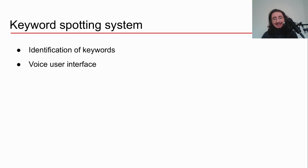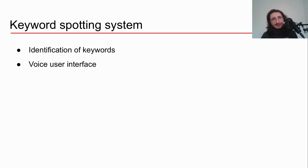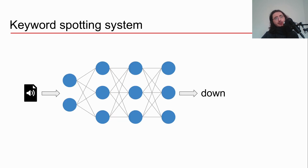A keyword spotting system is able to identify a limited number of keywords — so we're talking about classification here. We have audio files, we analyze them, and we decide what keywords are present. This type of application is used for voice user interfaces, where you give user commands and identify which keywords or commands you've just uttered.